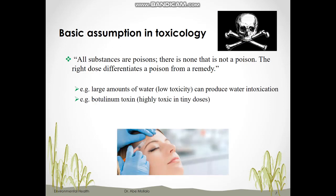For example, ingestion of a large amount of water, which has low toxicity, can produce water intoxication. Another example is sodium chloride or salt — when there is too much sodium in the bloodstream, water rushes out of cells to dilute it, which damages most cells including brain cells. Some chemicals can be toxic in very small doses, like botulinum toxin used in Botox to reduce wrinkles. Botox is actually a poison that prevents muscles from moving.